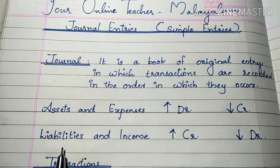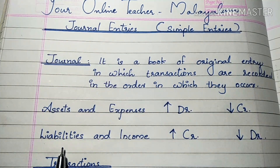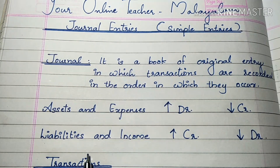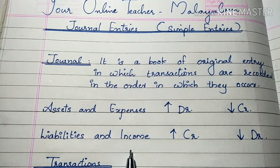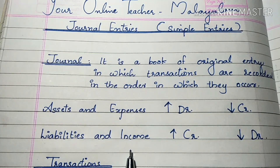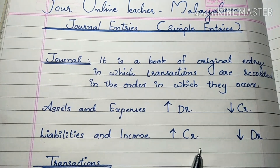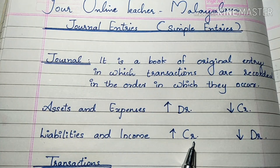What are liabilities? Examples of liabilities include: capital, loan, drawings, bills payable, creditors. Assets carry a debit balance, while liabilities carry a credit balance.